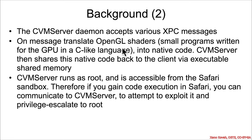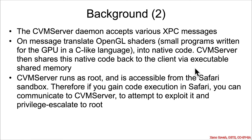OpenGL is a graphics API, and these shaders are small programs written in a C-like language that execute on the GPU. CVMS server is responsible for taking these shaders, translating them into native code that can then run on the processor and execute on the GPU, and it shares that memory back to the original client in an executable shared memory region.